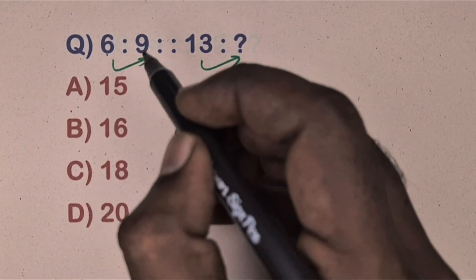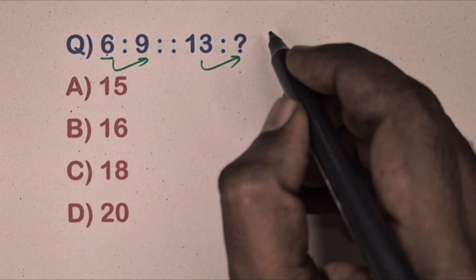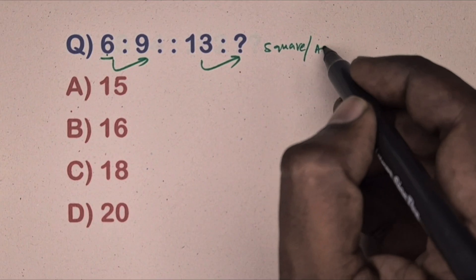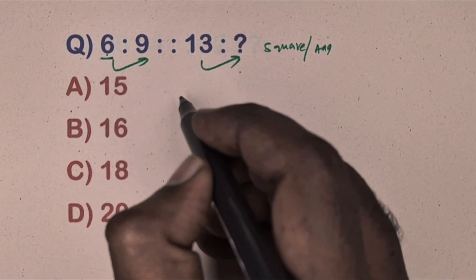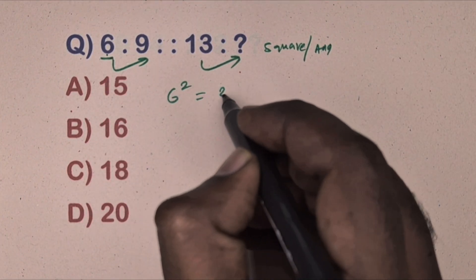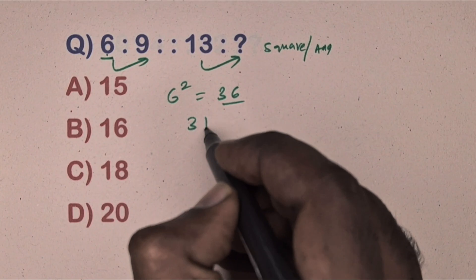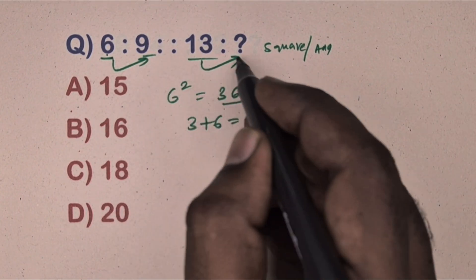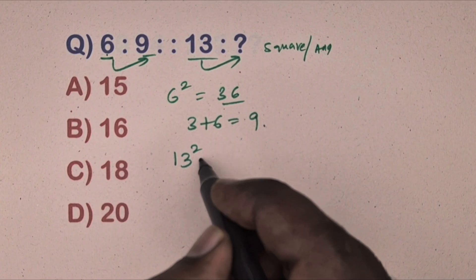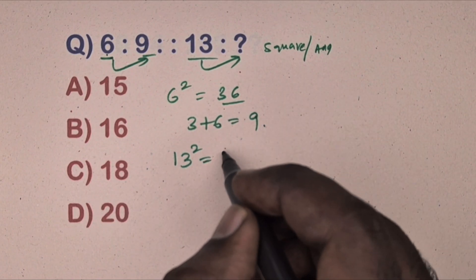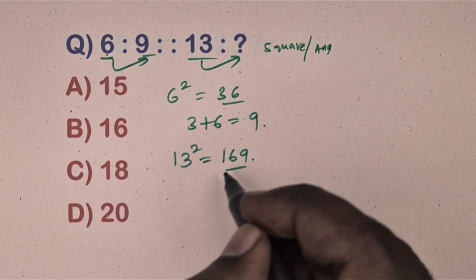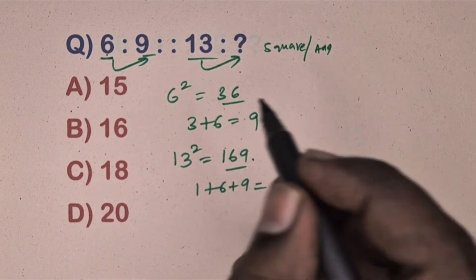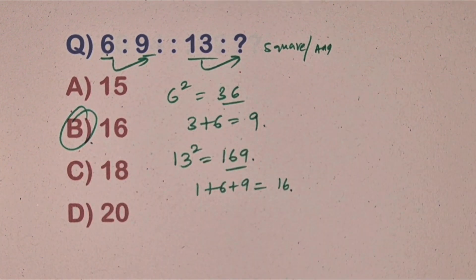Next question: six is related to nine, thirteen is related to which number. Options are given. This is square and digit-addition relation. Take six, six squared equals 36, add digits of 36 to get nine — nine is there. Same way, thirteen squared equals 169, add digits to get 16. Option B is the correct answer.